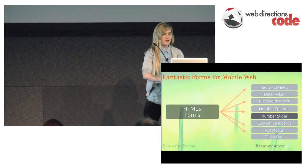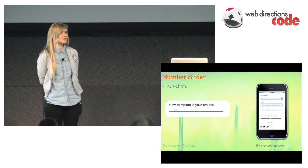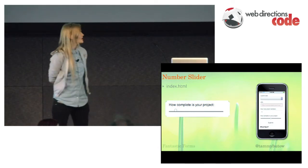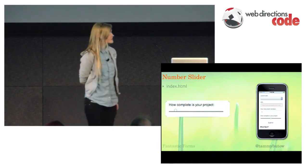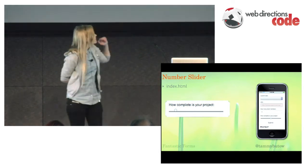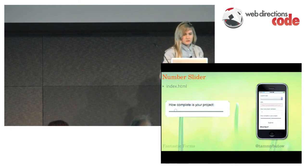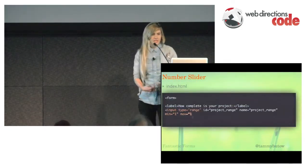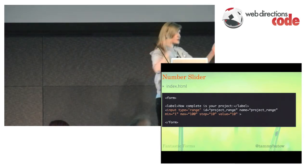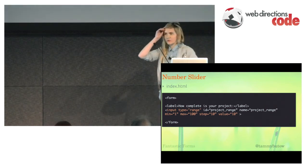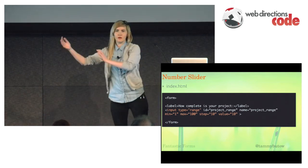The next one is number slider. Something like 'how complete is your project — how much is it done?' That's how it looks on mobile and on web, which looks pretty similar. That's input type equals range. You set the min and the max, and then you can step by different amounts as well, and you can set your initial value. I set the initial value as 10, which is why it was a little bit above zero.